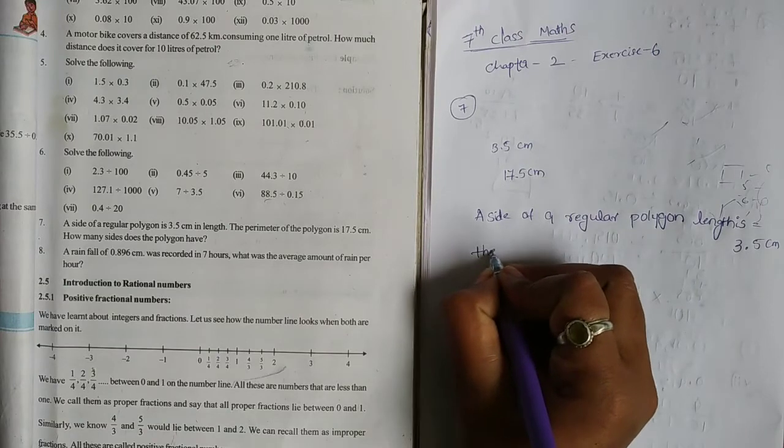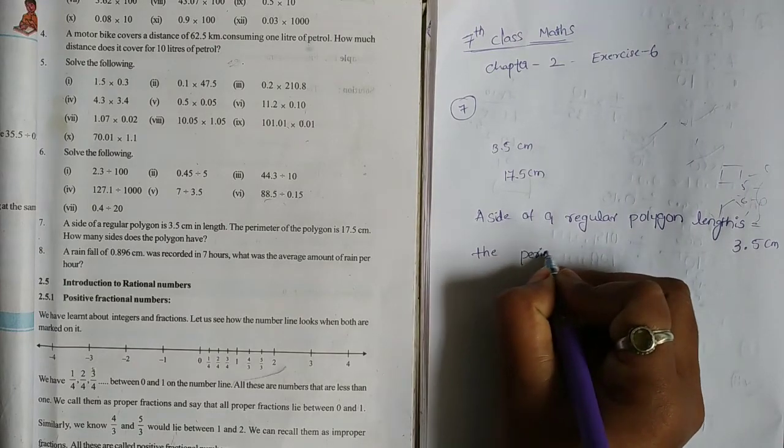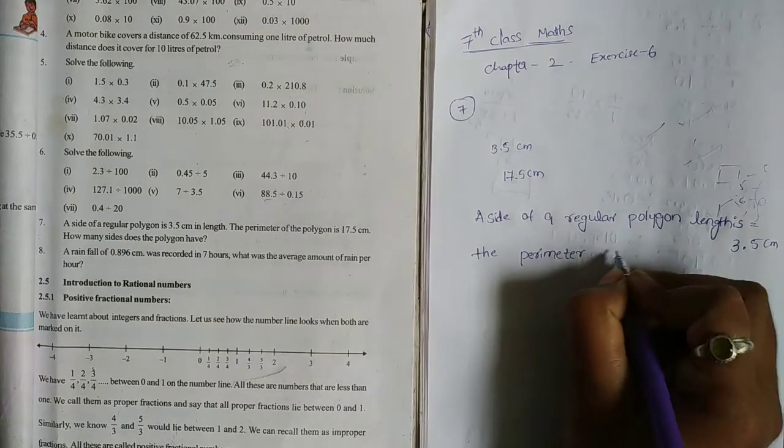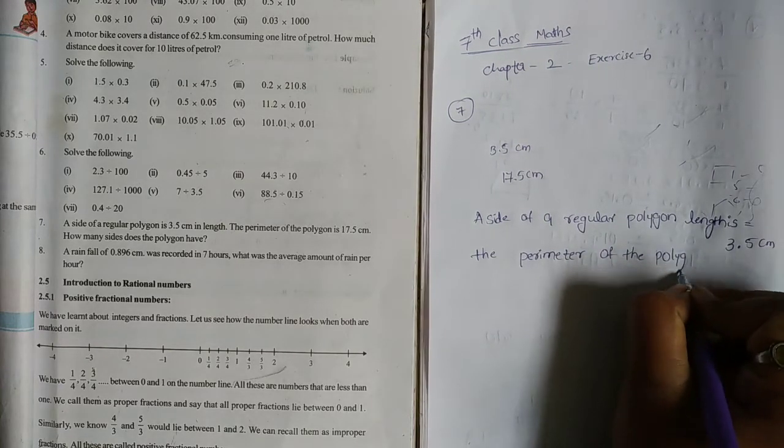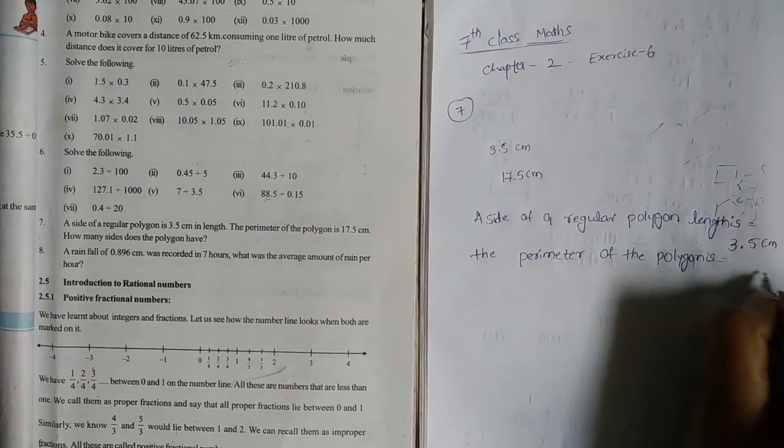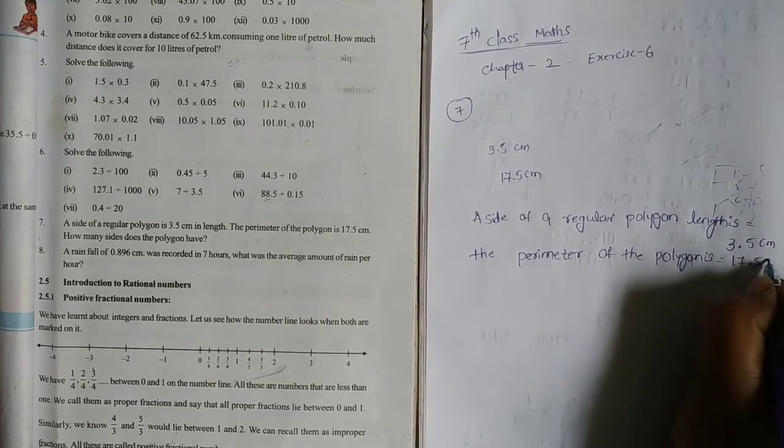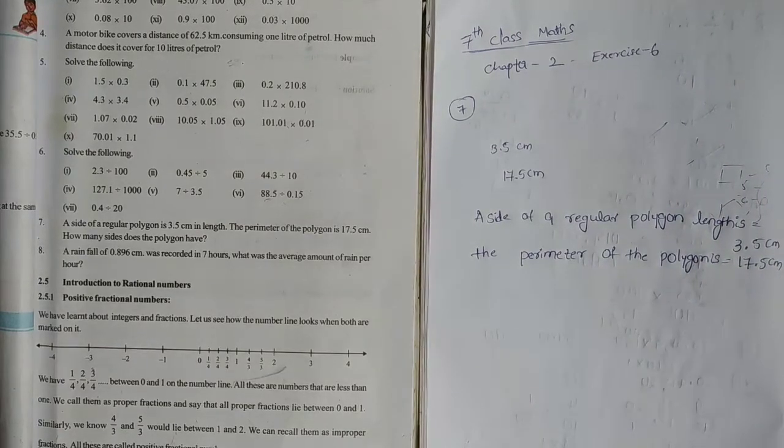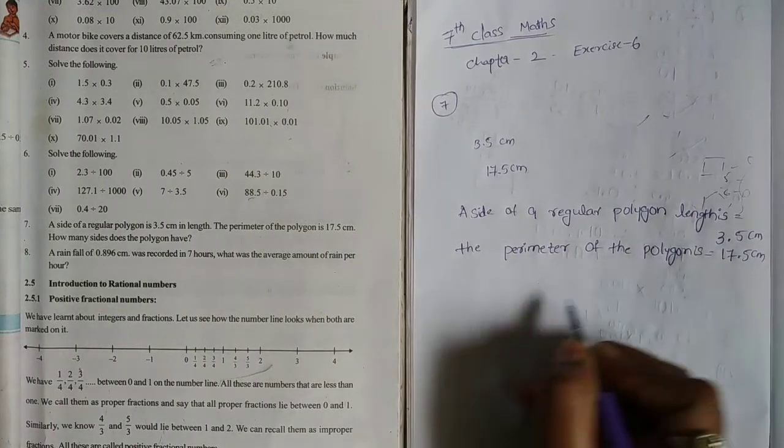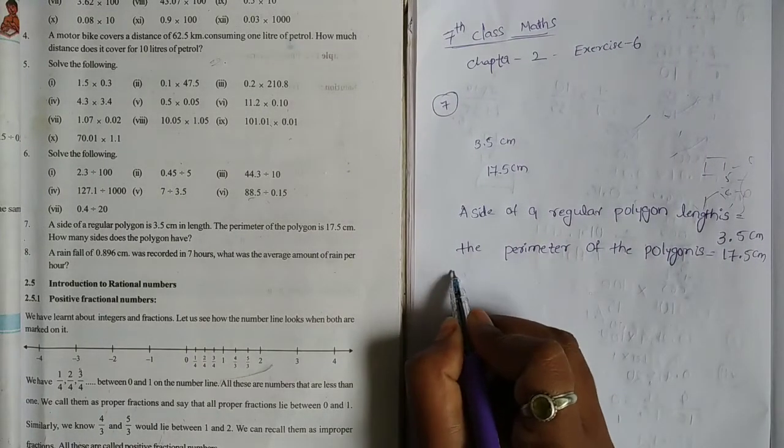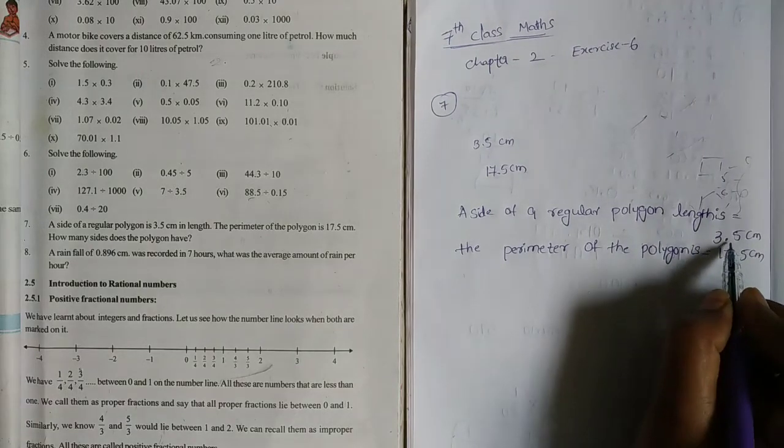Then, the perimeter of the polygon is 17.5 cm. 17.5 cm. Now, here our total perimeter is given.